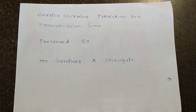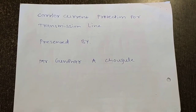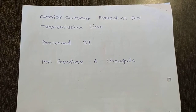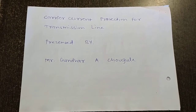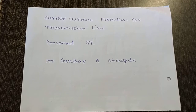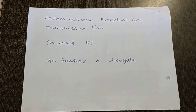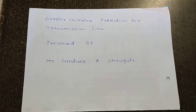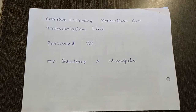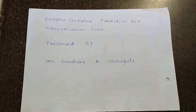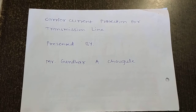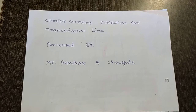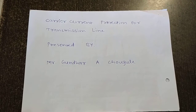Today we will discuss carrier current protection for the transmission line. This type of protection uses carrier current of frequency range 30 kilohertz to 200 kilohertz in the USA, and 80 kilohertz to 500 kilohertz in the UK, which are transmitted and received through the transmission line for protection purposes.